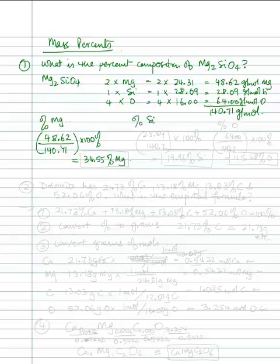The percent of silicon is 28.09 divided by 140.71 multiplied by 100%, which is 19.96% silicon. The percent of oxygen is 64.00 divided by 140.71 multiplied by 100%, which equals 45.48% oxygen.